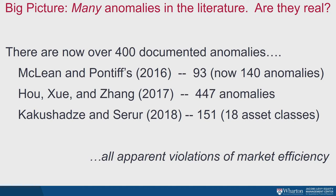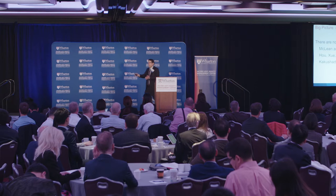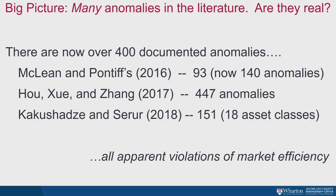I'm sure I don't need to introduce the idea of an anomaly to the people in this room. There are literally hundreds of asset pricing anomalies documented in the academic literature. My co-authors David McLean and Jeff Pontiff have a paper where they look at 93 different anomalies that have been published, since expanded to 140. Basically, as soon as you make a list of anomalies it's outdated. If you account for all the variations, you can easily come up with a list approaching 500 different asset pricing anomalies.